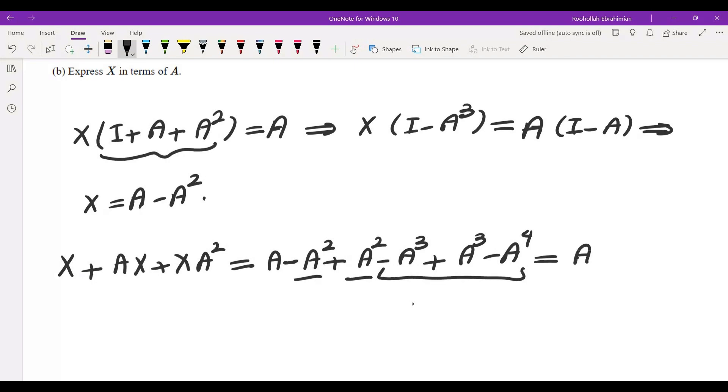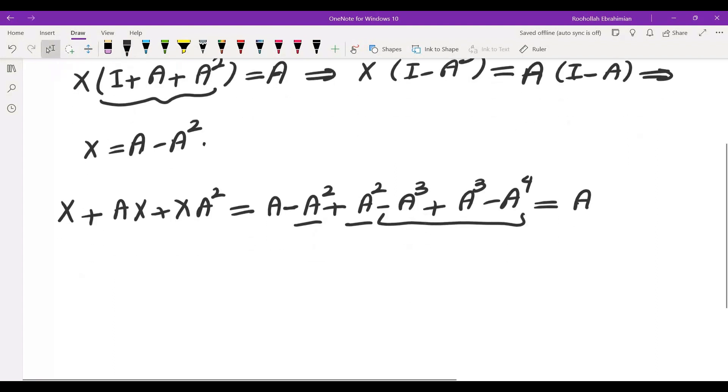So in fact we answered the second part of the problem: X is A minus A squared. Now I was hoping that I can solve the first part by just doing some manipulations.